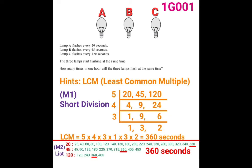For the third number, 120, since it is a large number, just list a few multiples. That is: 120, 240, 360, and 480. Now check for any common multiple among the three lists.